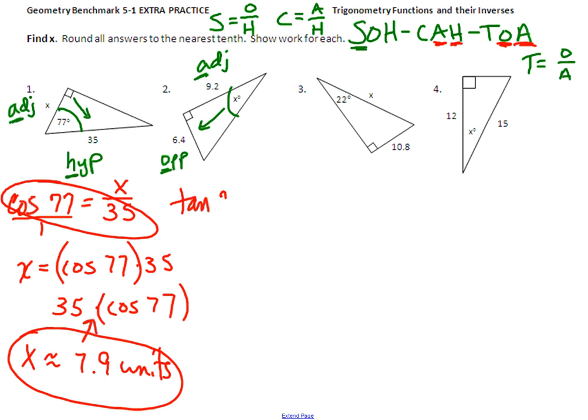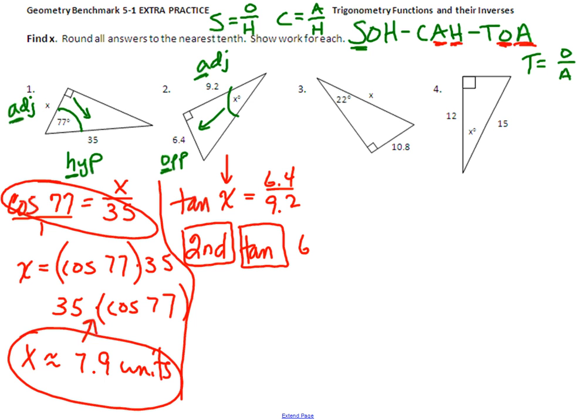So tangent of an angle, the angle happens to be X degrees, equals opposite over adjacent. So write that out. Now in the case where we don't know the angle we're going to have to type in our calculator second tangent, and then the division, so 6.4 divided by 9.2. And then equals. When you type in second tangent this little tan inverse will pop up.